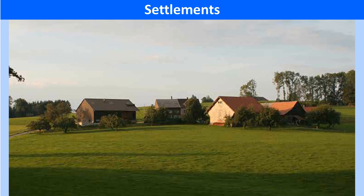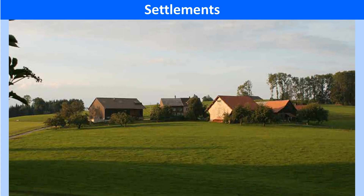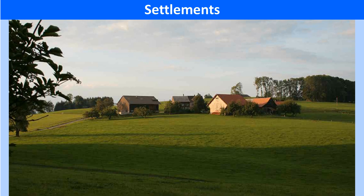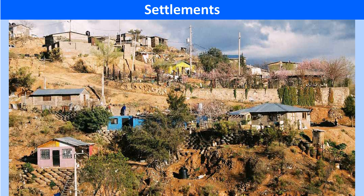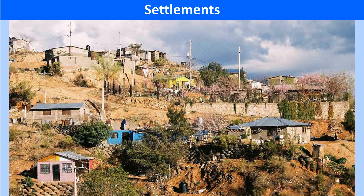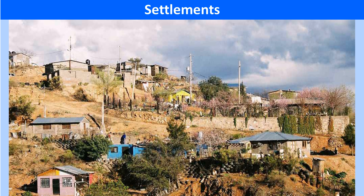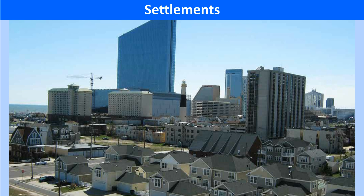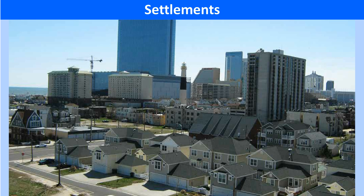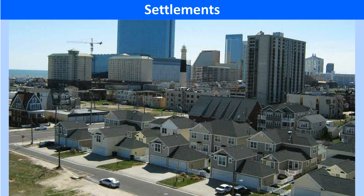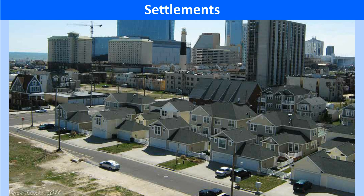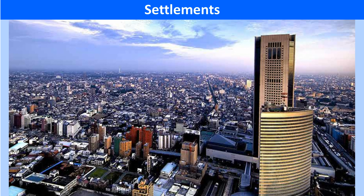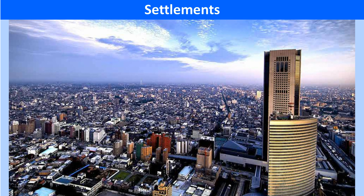Rural settlements may vary in size from an isolated dwelling located in the mountains to numerous villages around fertile agricultural land in the plains. A village, however, has limited facilities in terms of infrastructure like health care centers, education centers, markets, etc. On the other hand, the settlement is said to be urban when secondary activities like industries and tertiary services like banking or trade comprise the main occupations of the people. Infrastructure and civic amenities in terms of transport and communication, medical and educational facilities are better developed in urban areas.